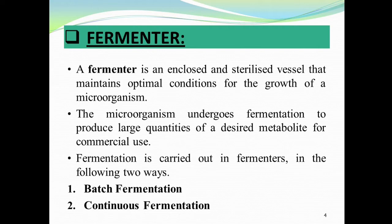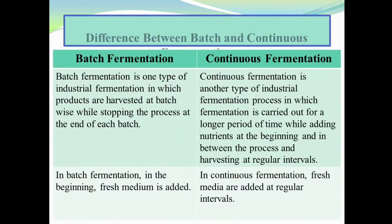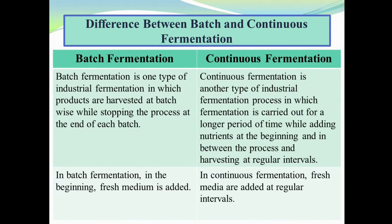Fermentation is carried out in fermenters in the following two ways: number one is batch fermentation, and number two is continuous fermentation. Batch fermentation is one type of industrial fermentation in which products are harvested batch-wise while stopping the process at the end of each batch. In continuous fermentation, fermentation is carried out for a longer period of time, while adding nutrients at the beginning, in between, and at the end of the process, and harvesting at regular intervals.